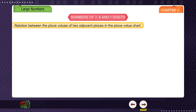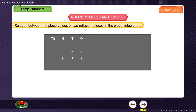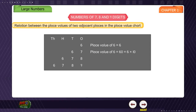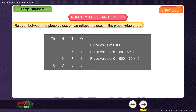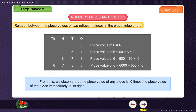Relation between the place values of two adjacent places in the place value chart. Thousands, Hundreds, Tens, Ones: Six, Six, Seven, Six, Seven, Eight, Six, Seven, Eight, Nine. Place value of 6 is equal to 6. Place value of 6 is equal to 60, which is equal to 6 into 10. Place value of 6 is equal to 600, which is equal to 60 into 10. Place value of 6 is equal to 6000, which is equal to 600 into 10. From this, we observe that the place value of any place is 10 times the place value of the place immediately to its right.